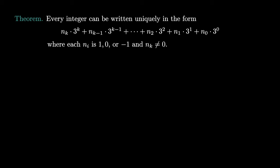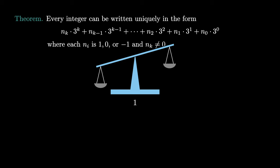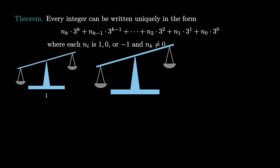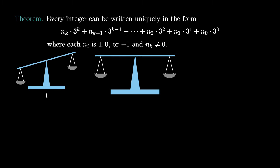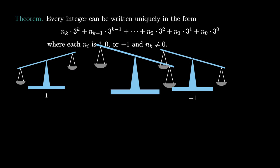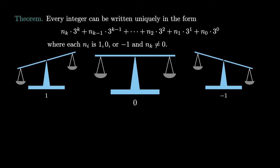This system is known as the balanced ternary representation because the digits 1 and negative 1 are balanced around 0. It also works well because if our scale tips left, we'll call that a 1; if our scale tips right, we'll call that a negative 1; and if our scale stays balanced, we'll call that a 0. So the three situations for a balance scale fit perfectly with the digits of the balanced ternary representation.